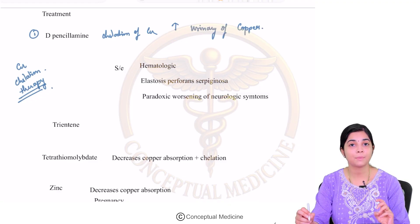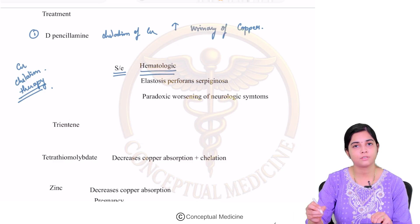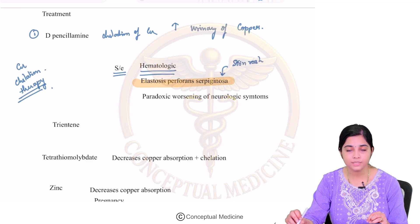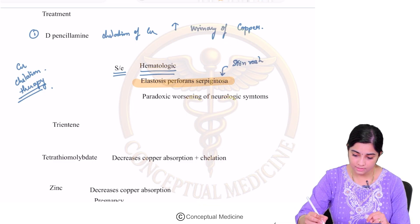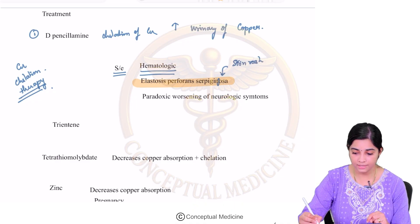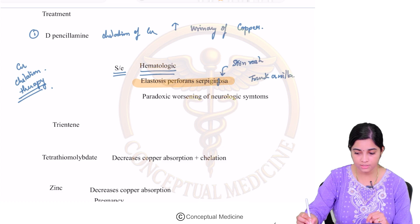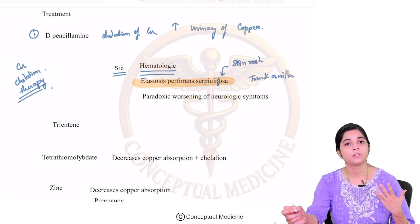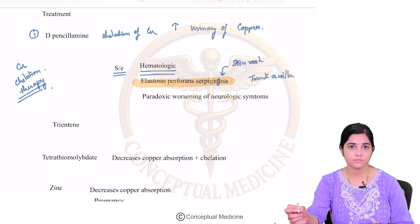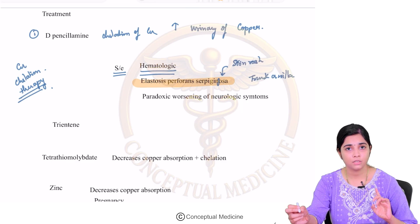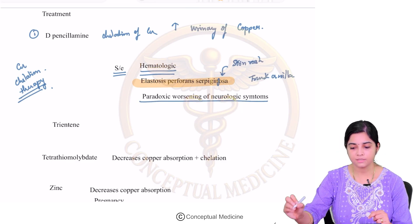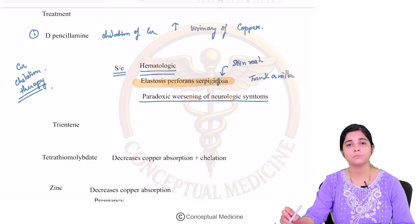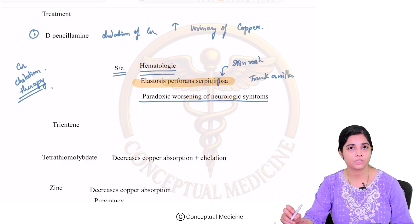D-penicillamine is the first-line drug, but it has certain side effects including hematologic side effects. The characteristic skin rash seen with D-penicillamine use is elastosis perforans serpiginosa — a characteristic skin rash seen in the trunk and axillae. Also, when D-penicillamine is administered to some proportion of patients with neurologic involvement, there can be paradoxical worsening of the neurologic symptoms. Always watch out for worsening of symptoms.